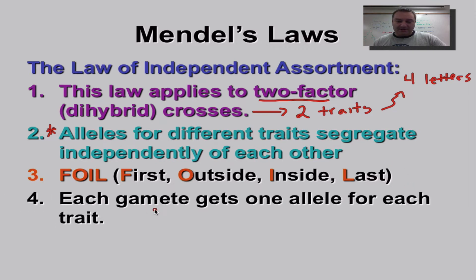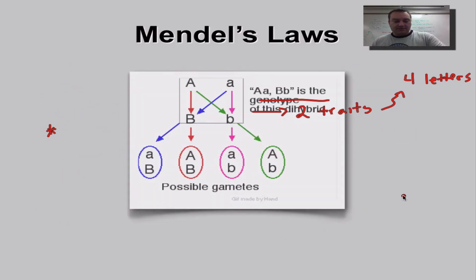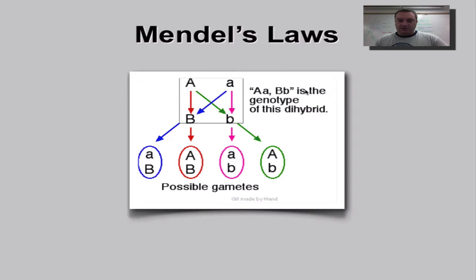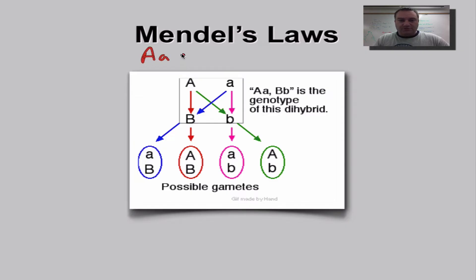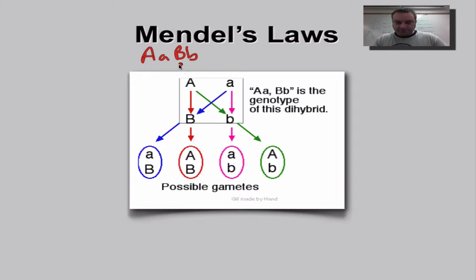Remember, each gamete is going to get one allele for each trait — one of each of the two kinds of letters. So we have an individual who is heterozygous for the first trait and heterozygous for the second trait. This would be an individual who's big A, small a, and big B, small b. It doesn't really matter what these letters stand for, just the fact that they're different.